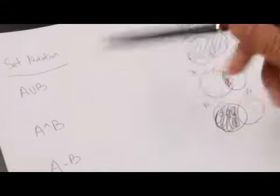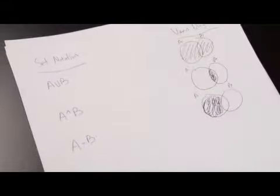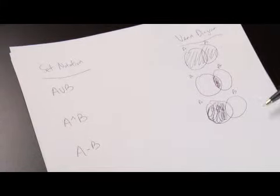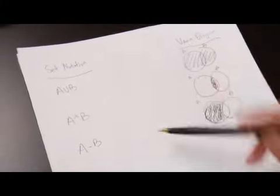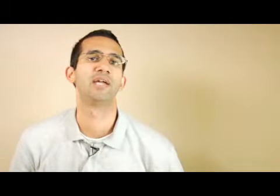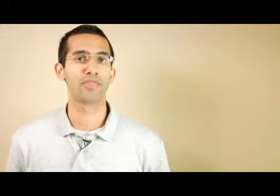So these are some examples of set notations followed by Venn diagrams to help you understand what the set notation symbols really mean and how they are written.